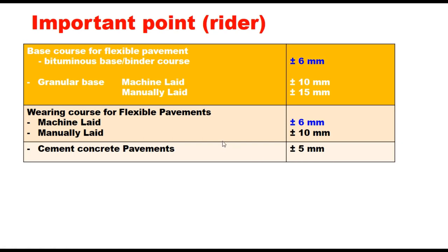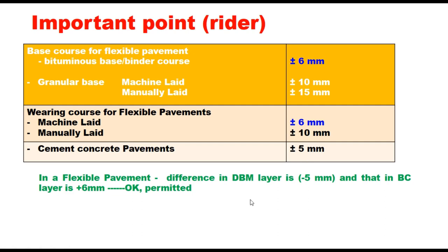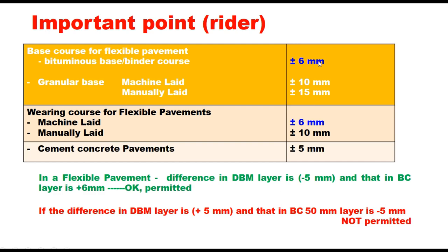To explain what this really means: for a bituminous base course in a flexible pavement, the tolerance permissible is plus or minus 6 mm, and for wearing course in a machine-laid construction it is plus or minus 6 mm. For example, in a flexible pavement, if the difference in DBM layer is minus 5 mm and that in BC layer is plus 6 mm, it does not reduce the thickness of BC layer and therefore it is permitted — both are within the permissible limit. But if the difference in DBM layer is plus 6 mm and that in BC layer is minus 5 mm, although minus 5 mm is within the permissible limit of plus or minus 6 mm, it is creating a reduction in thickness of the BC by more than 4 mm and therefore it is not permitted.